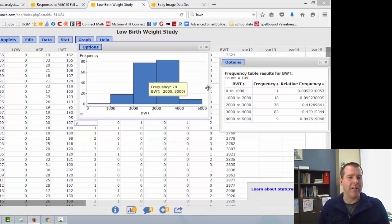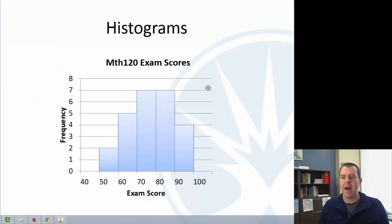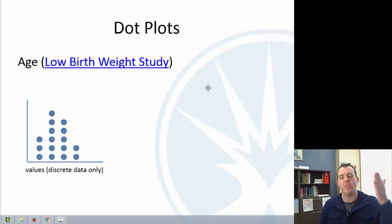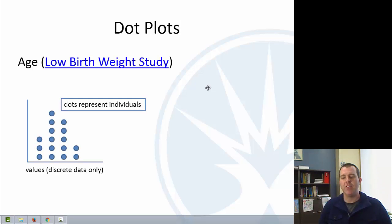Next plot, a little less common, is called a dot plot. And this is where you have the values for discrete data only here, because for continuous you have to have those intervals. But for discrete data, you have the values, and then you have dots above, and those dots represent the individuals in that particular study or data set.